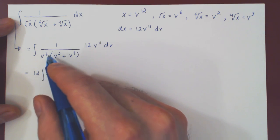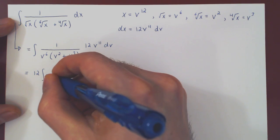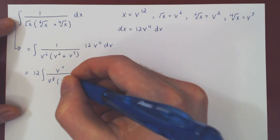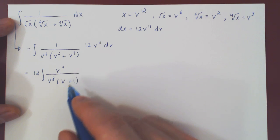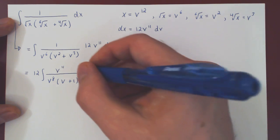And here we can factor a v squared. And we'll have v squared times v to the sixth, which is v to the eighth, times simply v plus one. If I swap the order, this would be one plus v, but this is the same as v plus one dv.